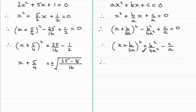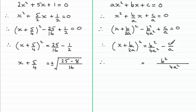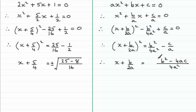Doing the same on the algebraic side: putting the two fractions over a common denominator of 4a squared. We already have b squared over 4a squared. For the c over a term, I multiply a by 4a to get 4a squared, so I multiply c by 4a, giving minus 4ac. So we have x plus b over 2a all squared equals b squared minus 4ac over 4a squared. Taking the square root of both sides, x plus b over 2a equals plus or minus the square root of the right-hand side.